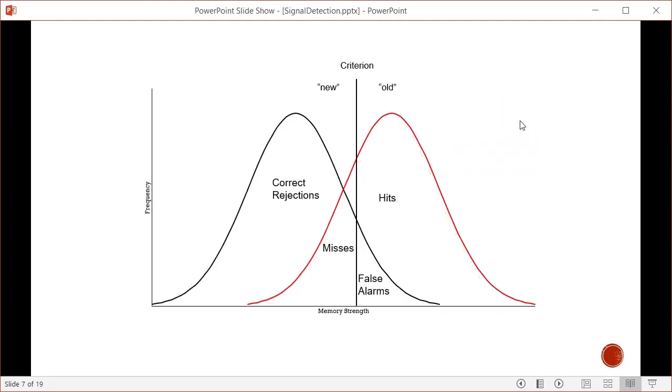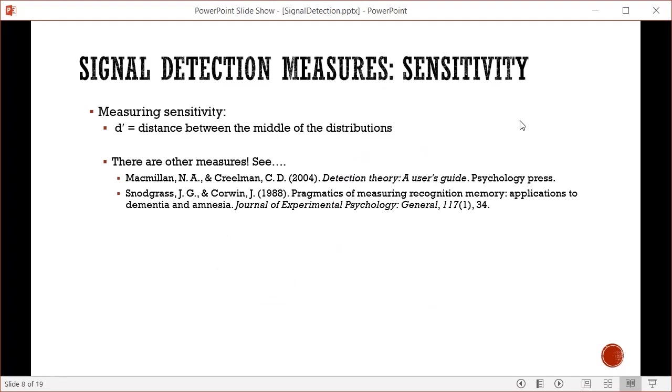These distributions overlap, and the areas can vary depending on several measures. One thing that can vary is sensitivity, which we measure in signal detection theory. There are different measures like A prime - see Macmillan and Creelman or Snodgrass and Corwin for references. Here we'll focus on D prime, which is the distance between the middle of the distributions and gives you a measure of sensitivity.